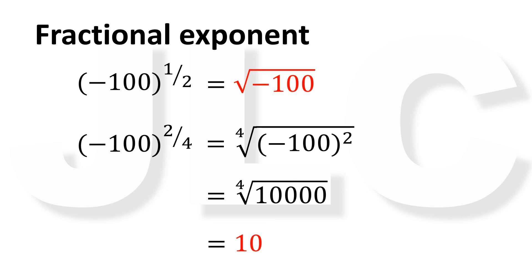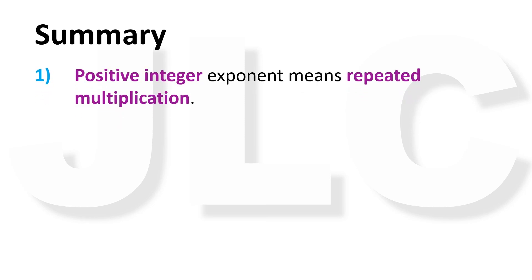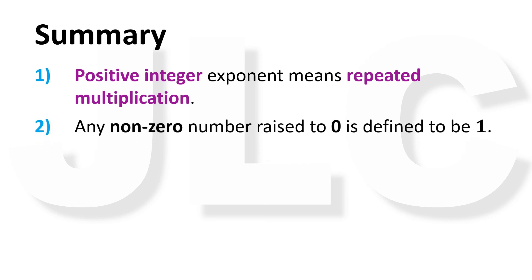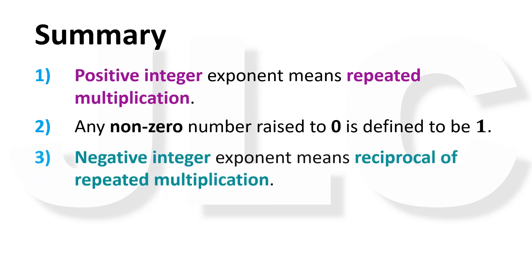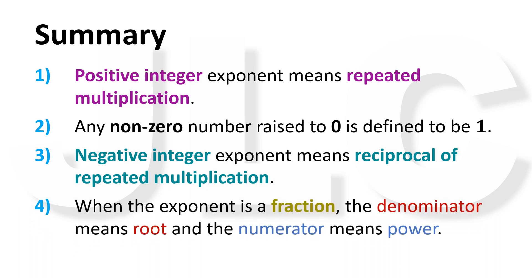Now let's have a quick summary of what we learned. Positive integer exponents mean repeated multiplication. Any non-zero number raised to 0 is defined to be 1. Negative integer exponents mean the reciprocal of repeated multiplication. When the exponent is a fraction, the denominator means root and the numerator means power. And that is the meaning of exponentiation. Thank you for watching and see you in the next video.